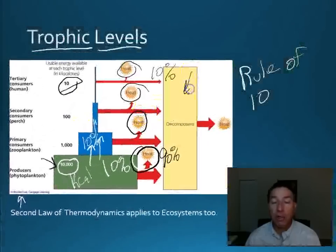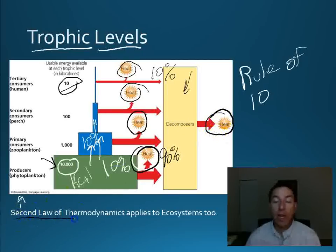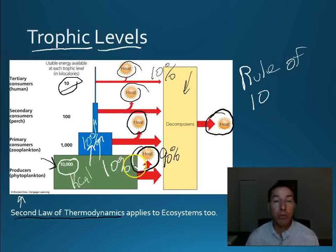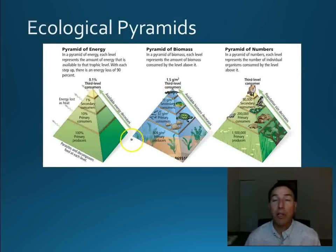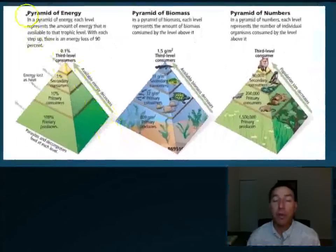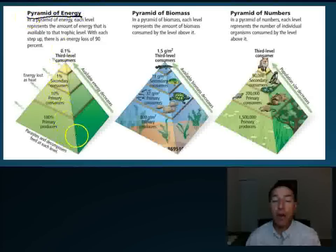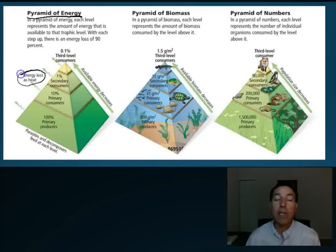Decomposers also take some of that energy when they decompose organisms, but we still lose a lot as heat. This applies to the second law of thermodynamics, which says that every time energy is transferred between different types — for example from kinetic to potential energy — a little bit of the usable, high-quality energy is lost into the system as heat. Ecosystems are no different. This brings us to the concept of ecological pyramids. The first is the pyramid of energy, which shows how energy decreases as we move up those trophic levels and the energy lost as heat.